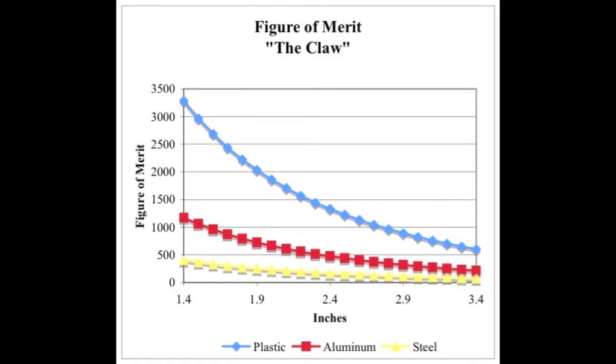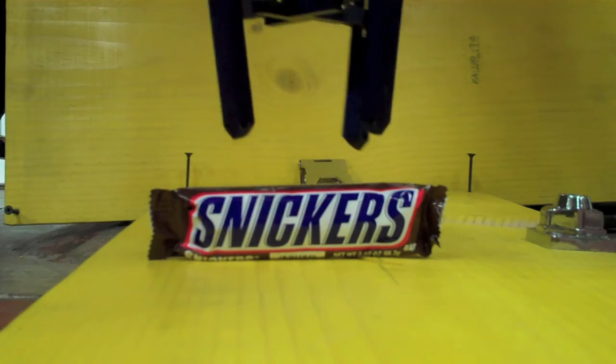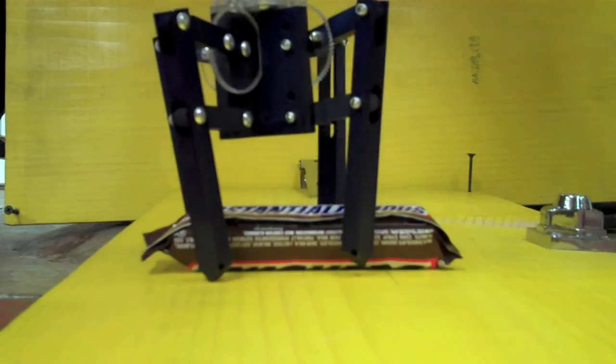We used three materials for our figure of merit equation. As you can see, the plastic had the greatest figure of merit. However, for ease of machining and design, we used aluminum to make our prototype.